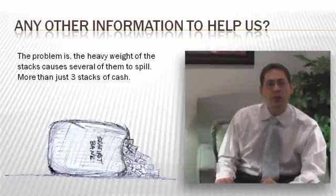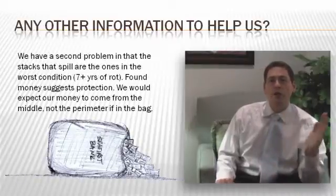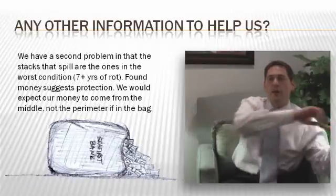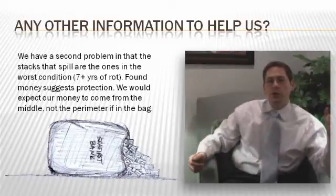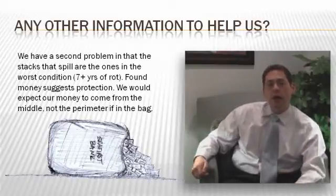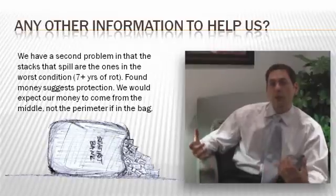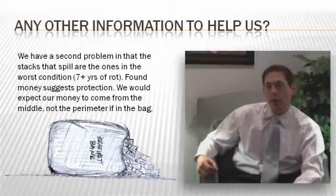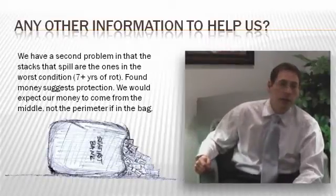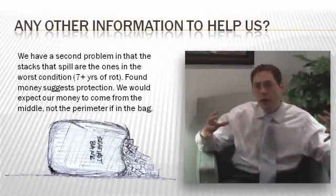We have a secondary problem, which is the stacks of cash that spill out of the bag are actually the ones on the perimeter. If you think of this stack of cash and it's been put on its side and then the end rips open, which stacks of cash are dumping out? The ones right off the very top. We've discussed this in previous videos that the condition of the money really suggests some kind of protection. Most people think that it's okay to assume that the money bag itself was the protection.